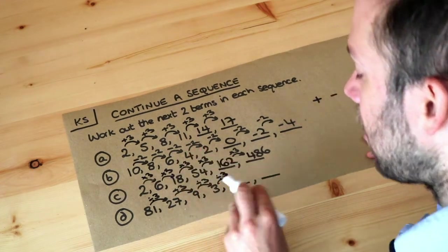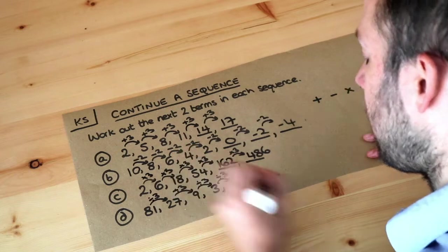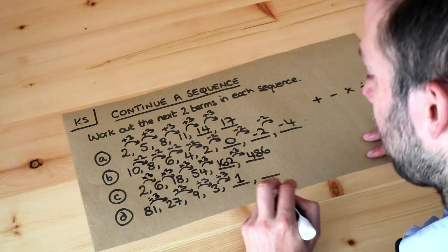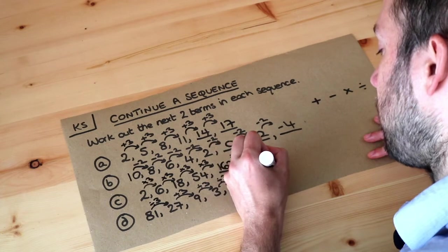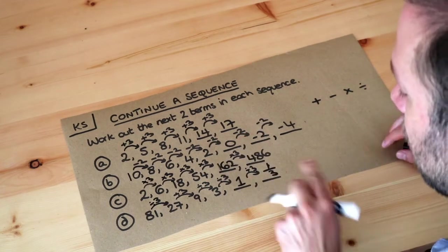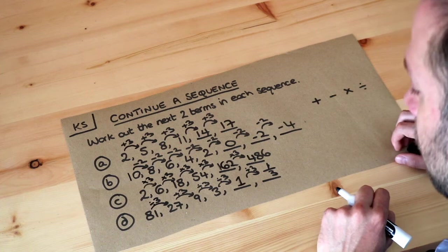Divide by 3 again. 3 divided by 3 is 1. And then when we divide 1 by 3, well we're getting into fractions now. So that's going to be a third. Because if you split a whole into three parts, then you would have a third of a whole.